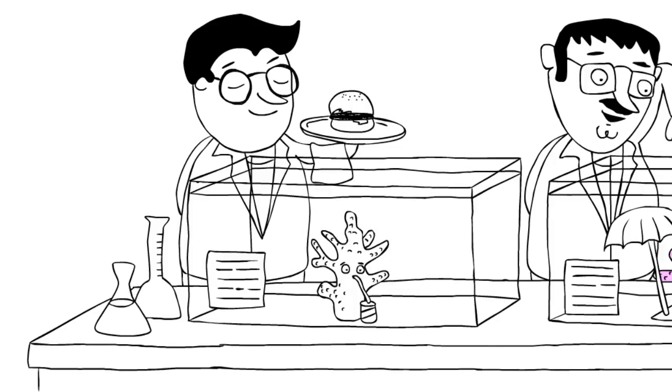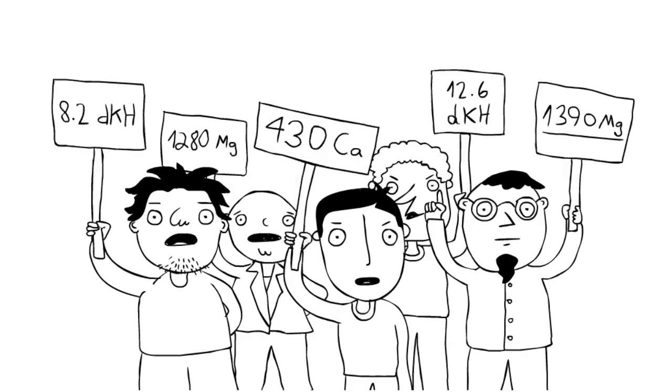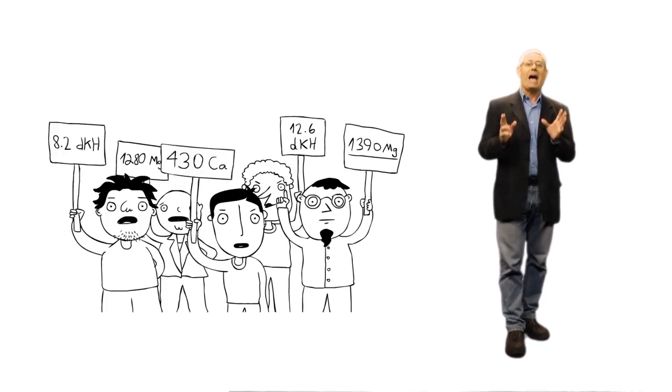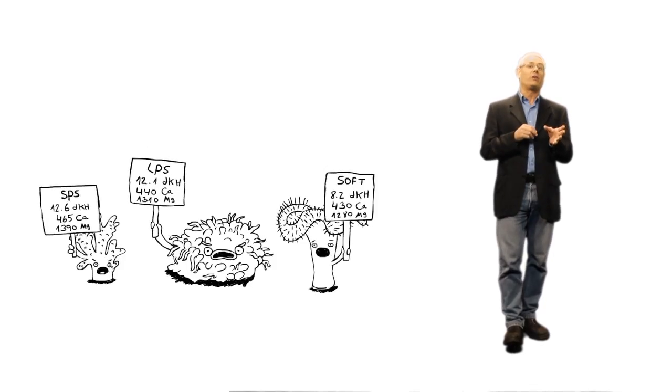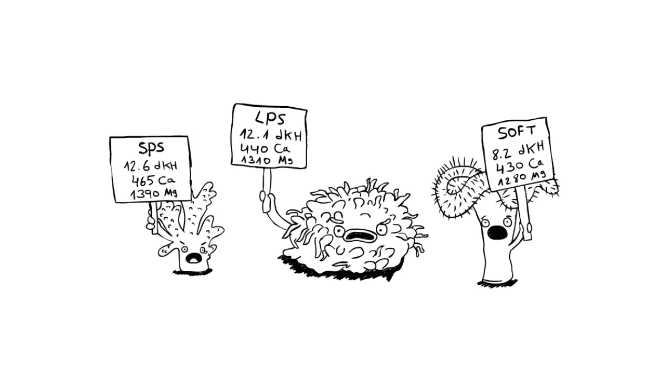Common practice suggests that many individual water parameters are optimal for corals. Red Sea's research, however, discovered that the key is in maintaining optimally balanced ratios among the elements and that their levels are not only dependent upon the type of corals in the system, but also on what it is you want to achieve.